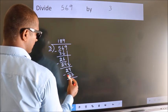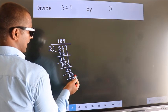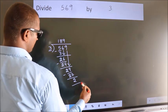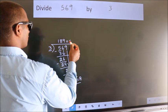Now we subtract. We get 2. No more numbers to bring it down. So we stop here. This is our remainder. This is our quotient.